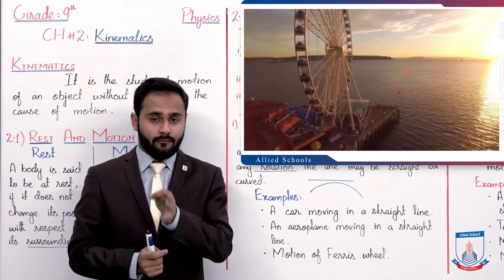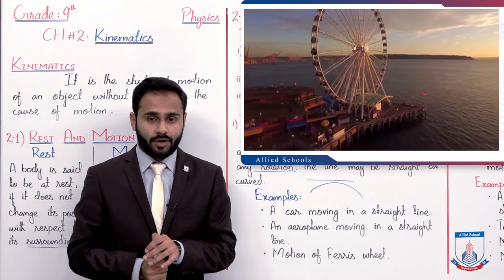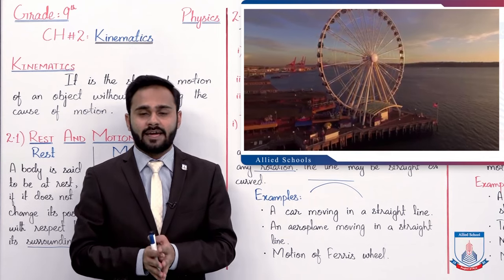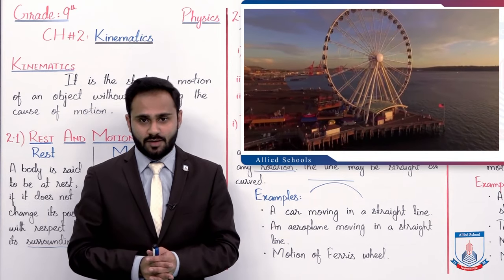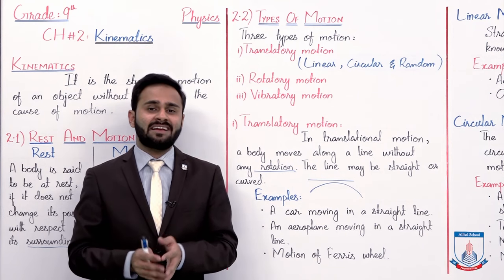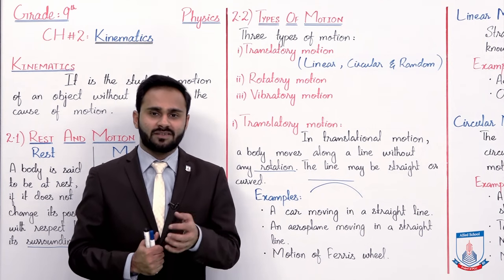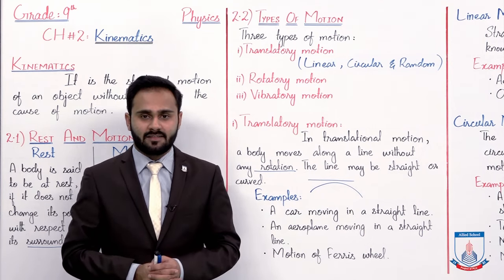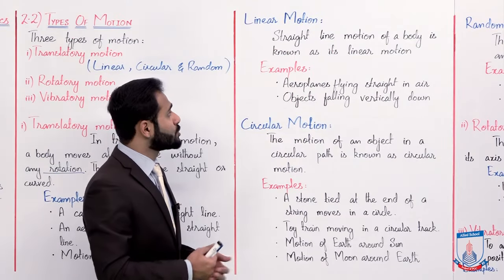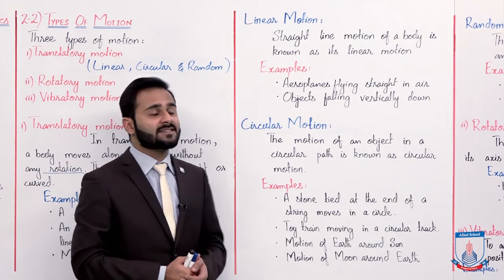But remember ki woh body line mein to move kar rahi hai, but without any rotation — rotation yahaan par nahin honi chahiye. Toh aise motion ko phir hum kehte hain translational motion. Translational motion ko further divide kar diya gaya tha three types mein: linear, circular, and random motion. So, linear motion — straight line motion of a body is known as its linear motion.